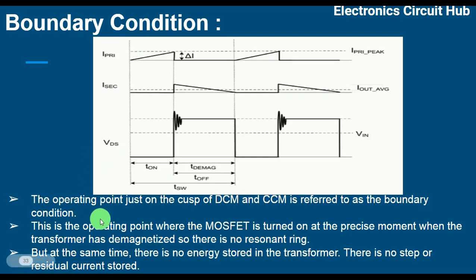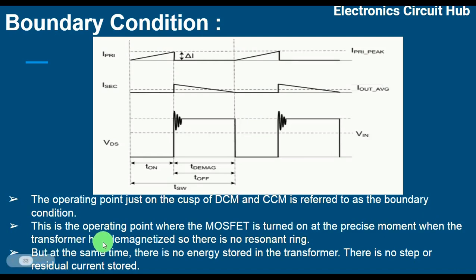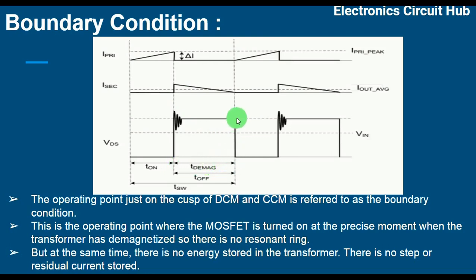This is the operating point where the MOSFET is turned on at the precise moment when the transformer has demagnetized. You can see the time at which the transformer is totally demagnetized — there is no resonance entering and no valley switching here.